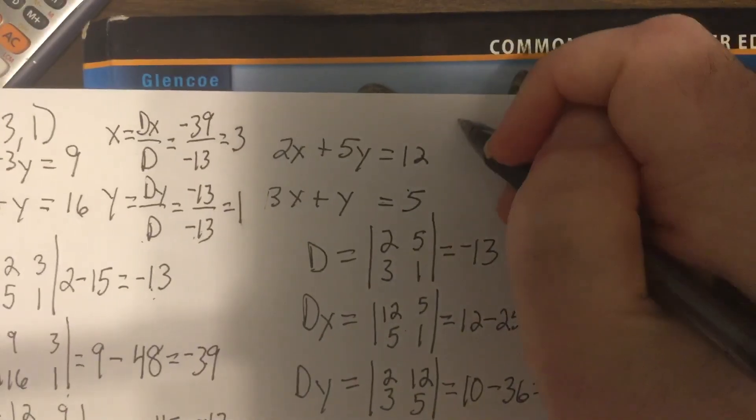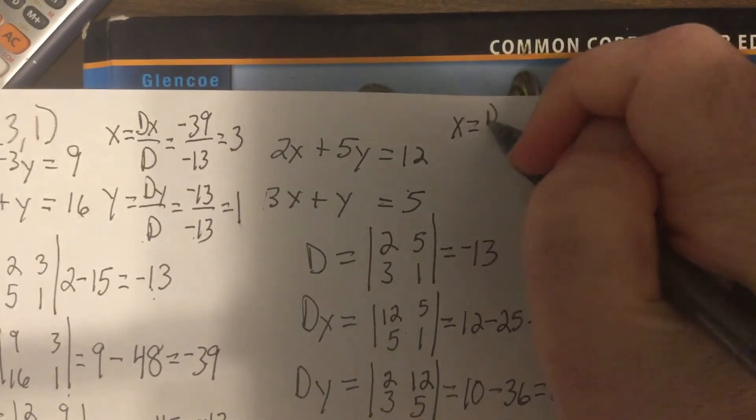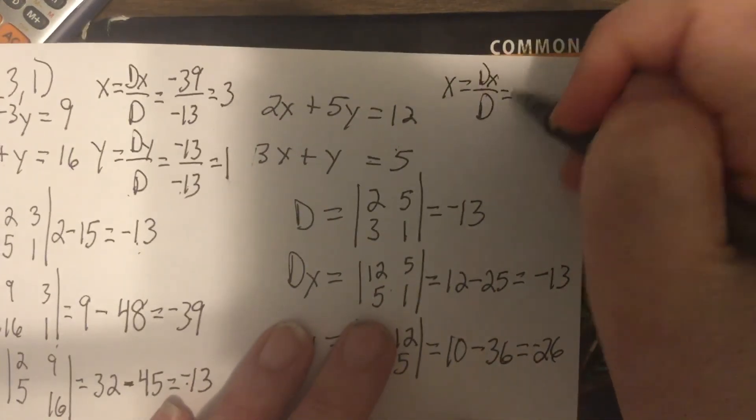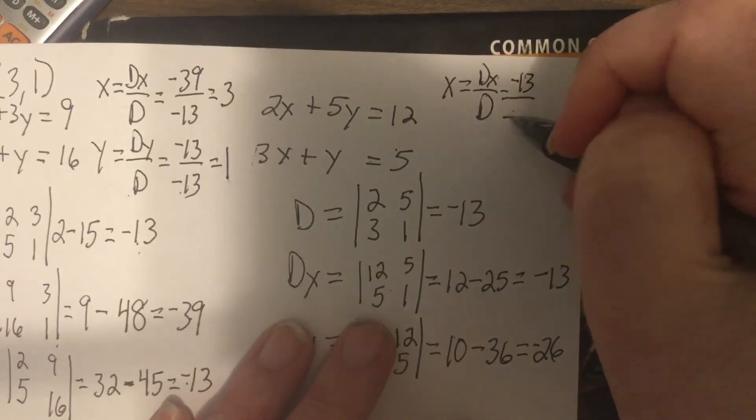So, X is DX divided by D, which would be negative 13 divided by negative 13.